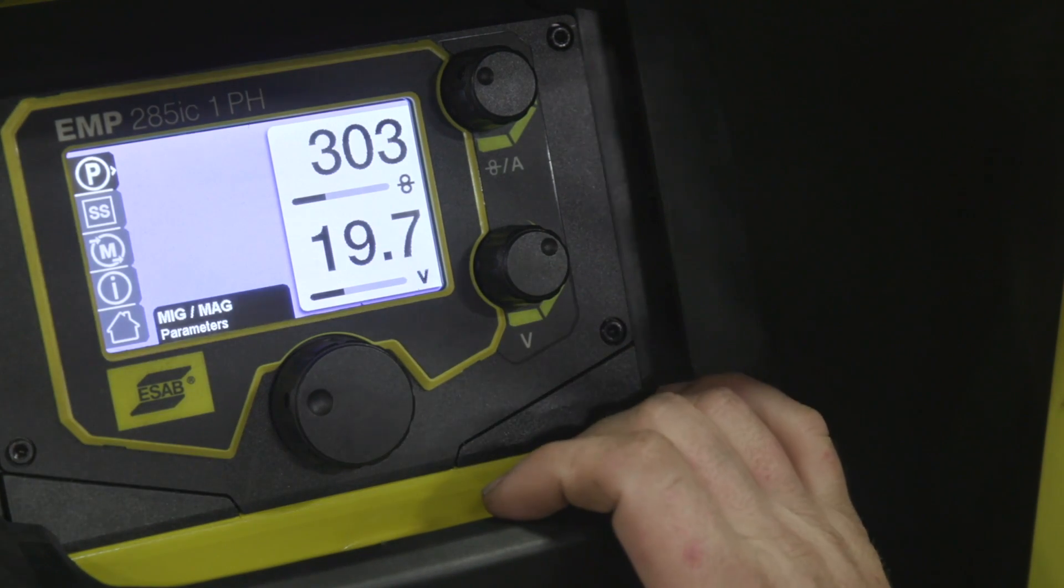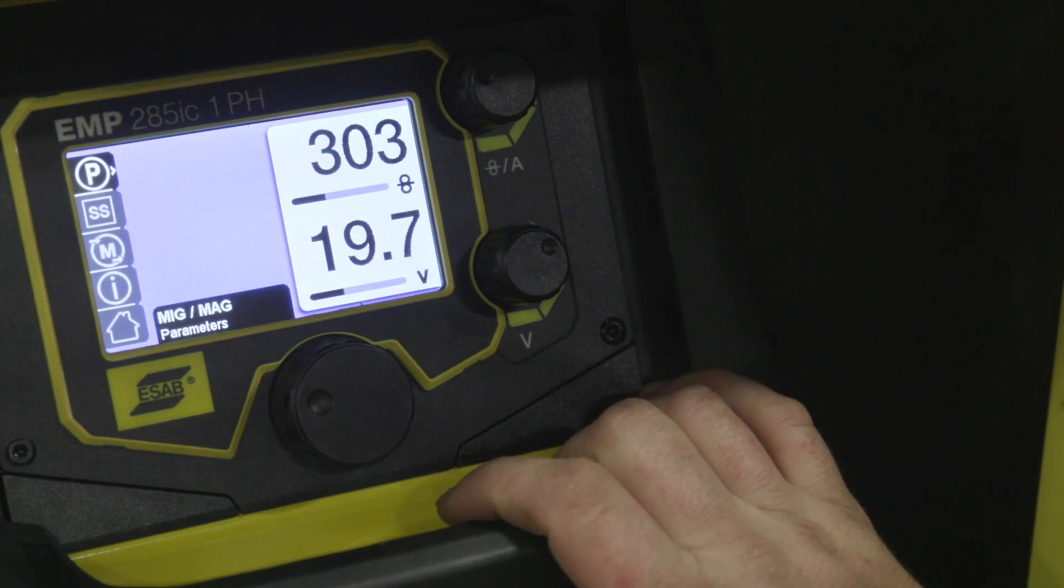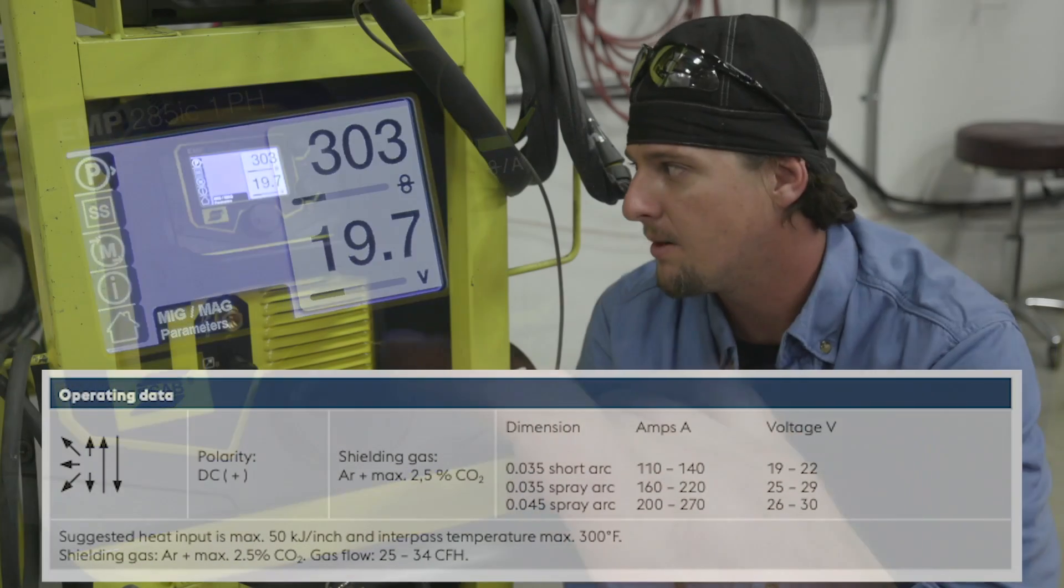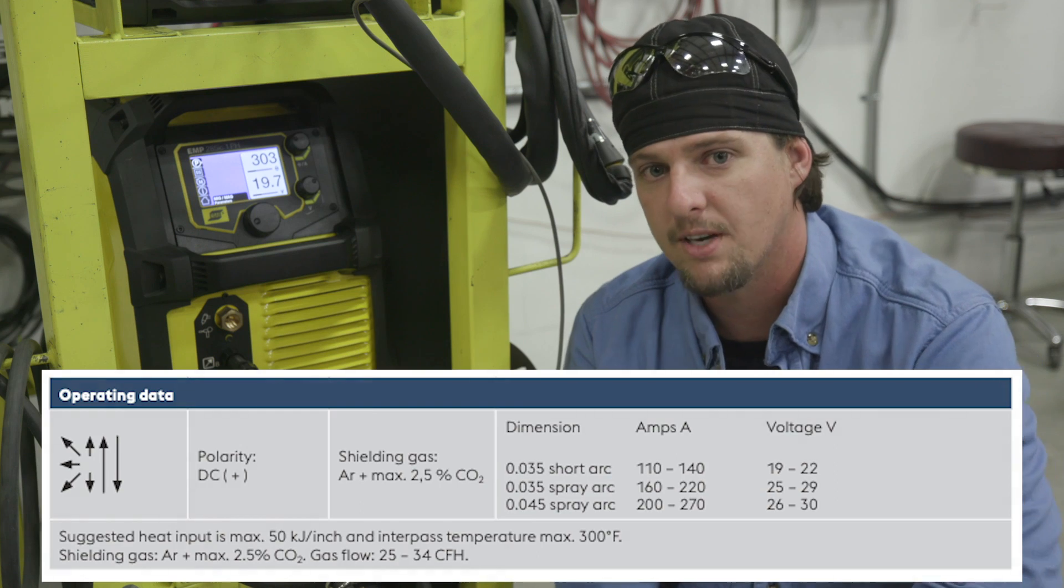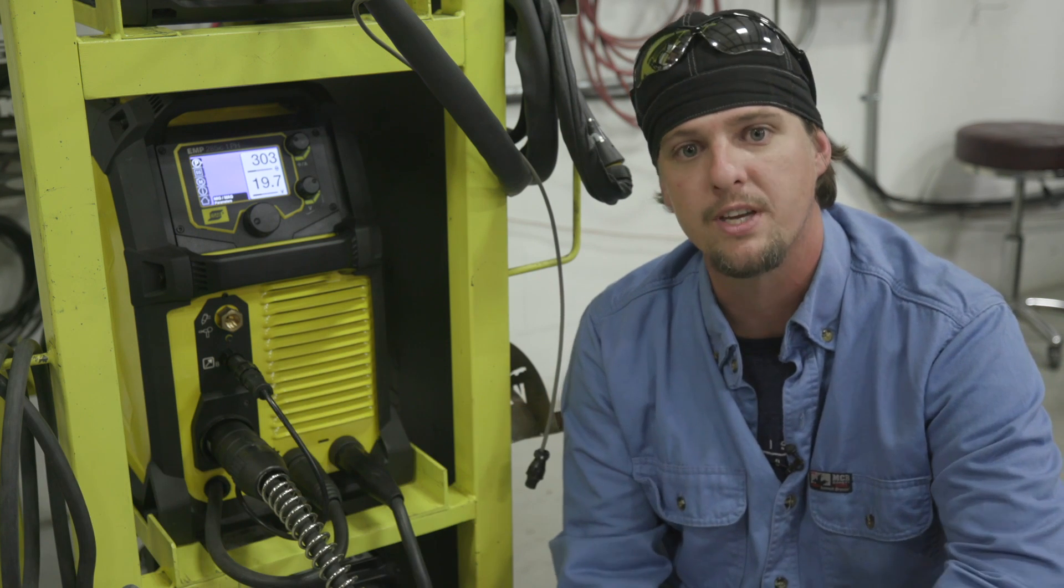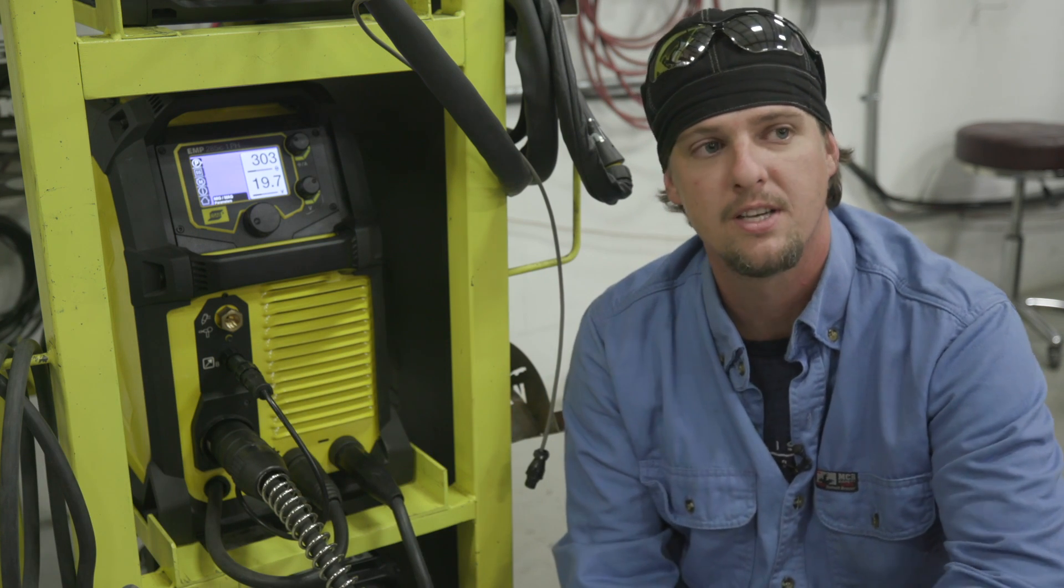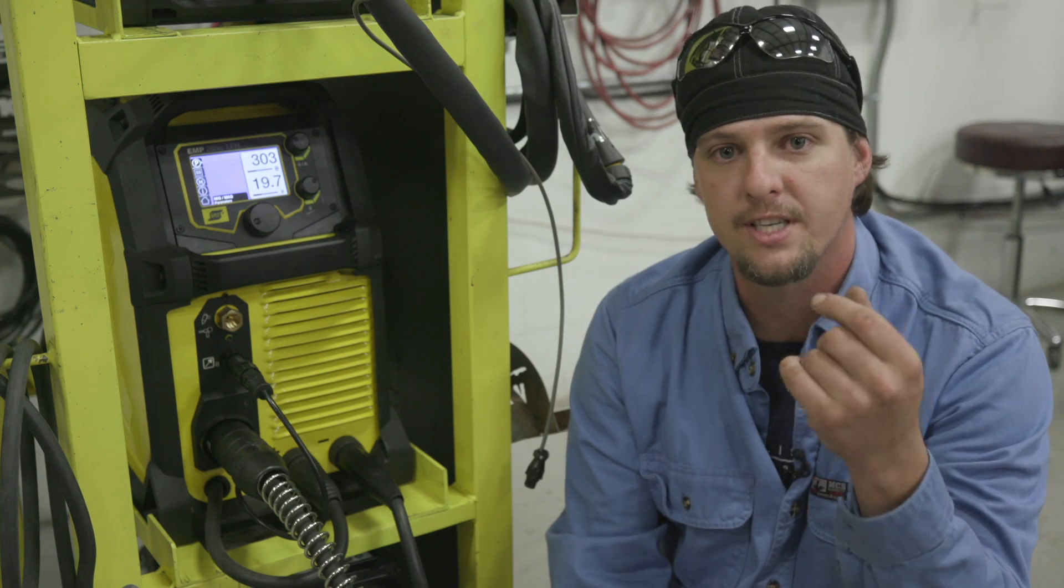I like running a little bit running high. I want to get that penetration. And on the volts, it's 19.7. The bowler wire recommends between 19 and 22. So we're going to be running about 19.7. It's running pretty sweet. And we're running tri-mix and I'm running about 25 to 30 CFH.